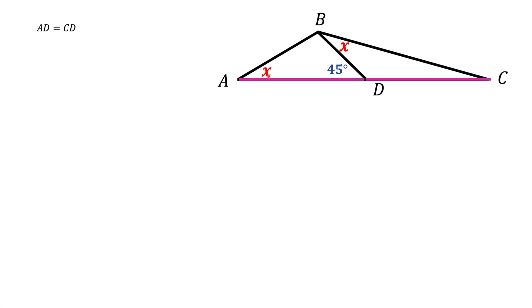So first of all let's find out what this angle C is. We see this angle of 45 degrees is an external angle to triangle BDC, and therefore this 45 degrees equals to this X plus angle C.